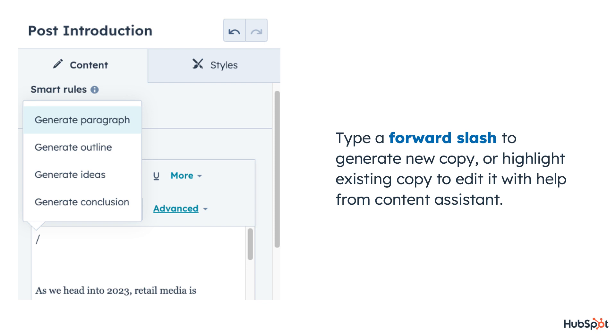Type a forward slash to generate new copy, or highlight existing copy to edit it with the help of Content Assistant. With slash and highlight commands, you can generate or edit your blog post text right in line. No more jumping between tabs or apps. Now that's efficiency at its finest.